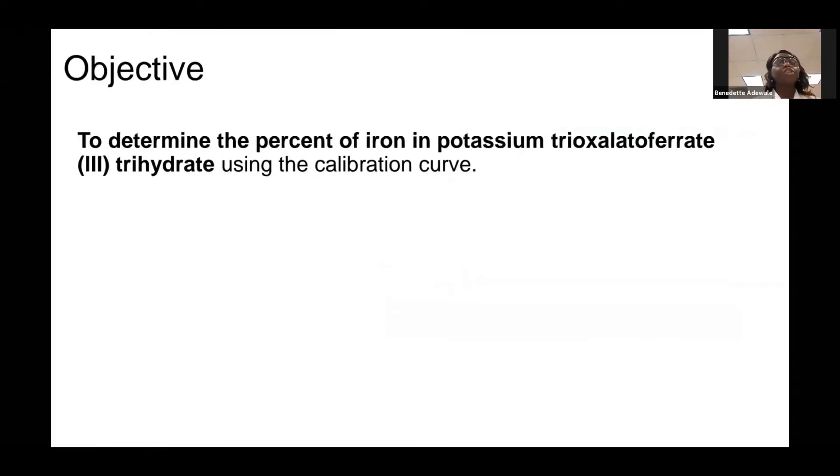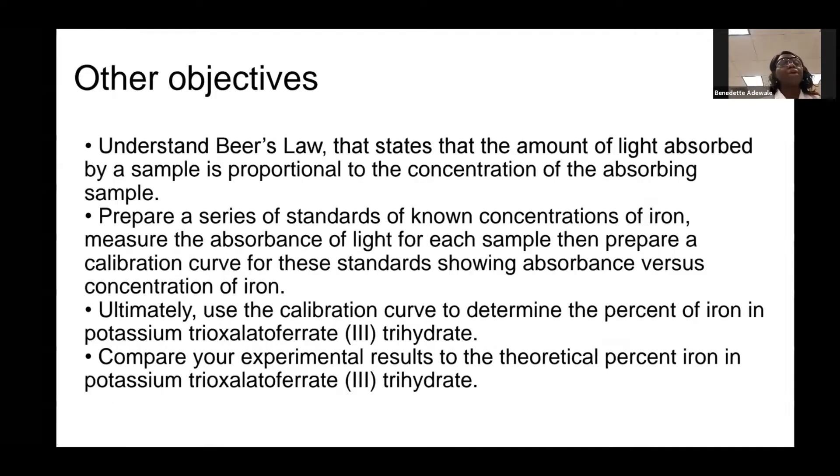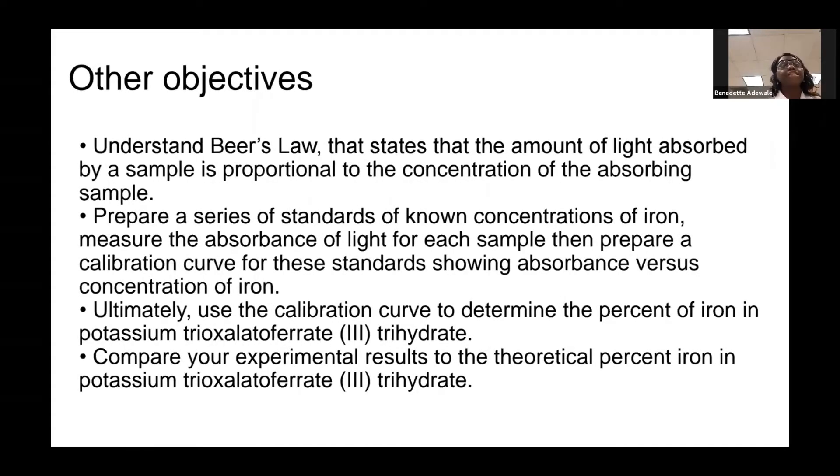In Experiment 6, you synthesized potassium trioxalato ferrite trihydrate. In this experiment, you are going to determine the percent of iron using the calibration curve. Another objective of this lab is to understand Beer's Law, which states that the amount of light absorbed by a sample is proportional to the concentration of the absorbing sample.